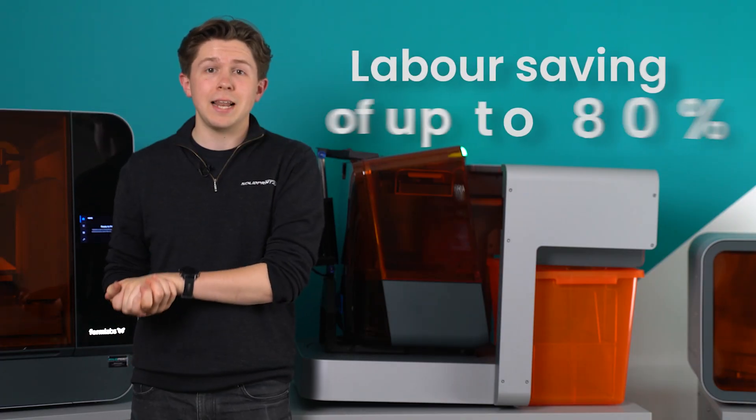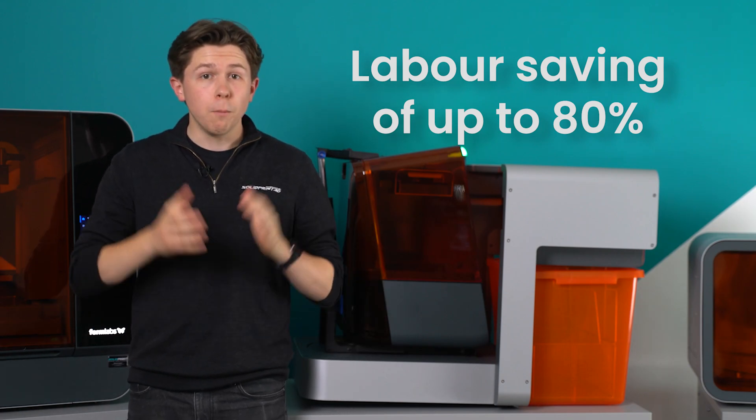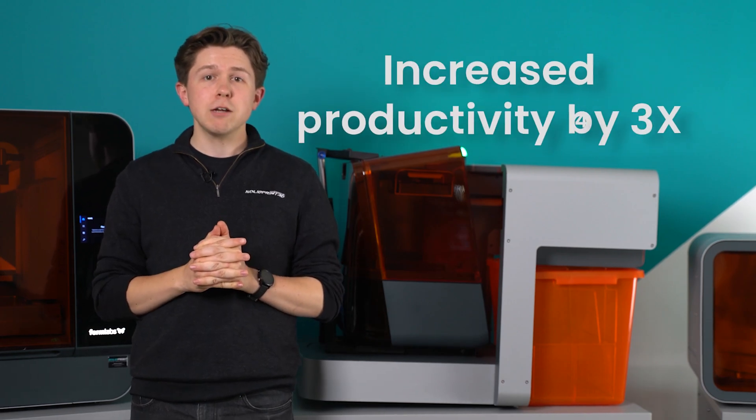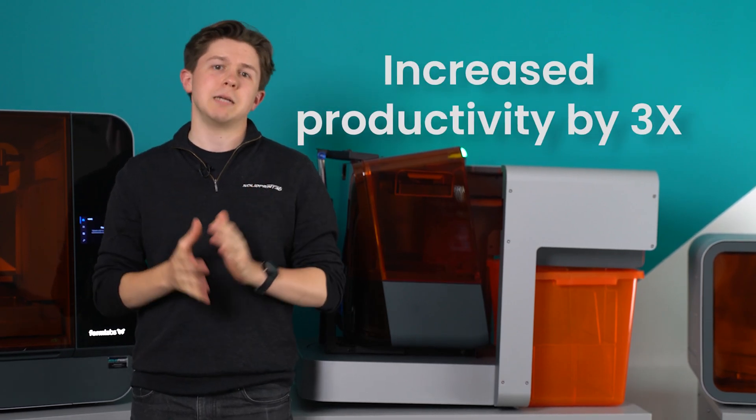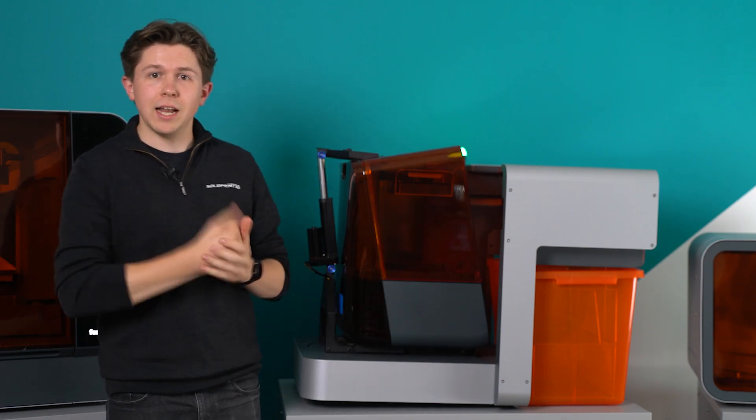All in all, the Form Auto adds a labour saving of up to 80% for the Form 3 ecosystem, a lower part cost by roughly 40% and an on average increased productivity by three times. Now I can't wait to set up our new machine and see it all in action, so let's give it a go.